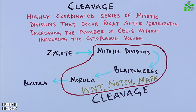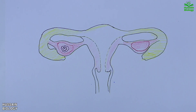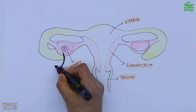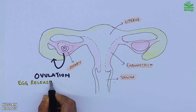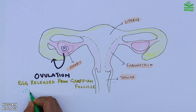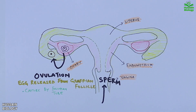Now let's see the cleavage process in detail. Here in this diagram we have the female reproductive system having ovary, endometrium, vagina, and uterus. From the ovary we get ovulation as shown in the diagram, where the egg is released from the Graafian follicle, then captured by the fallopian tube. Then from the vagina the sperm travels to the egg and fertilizes it.